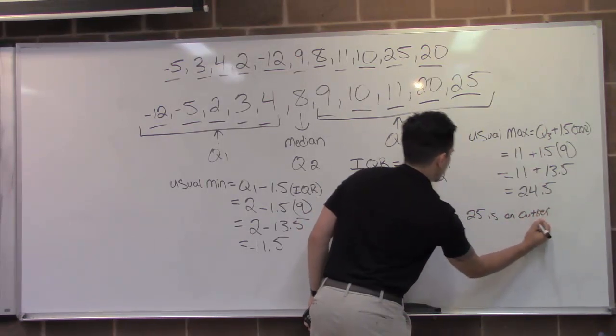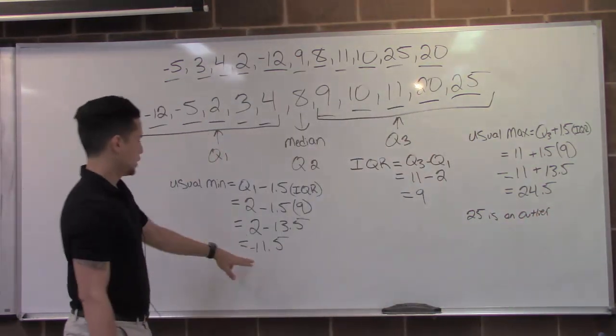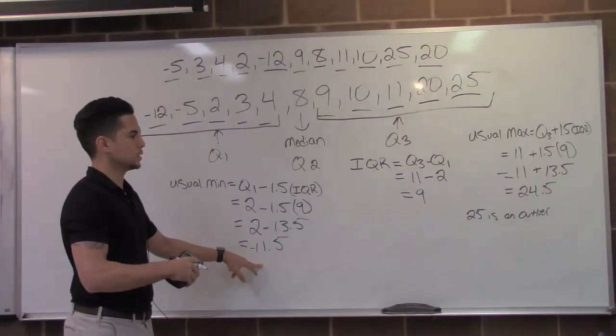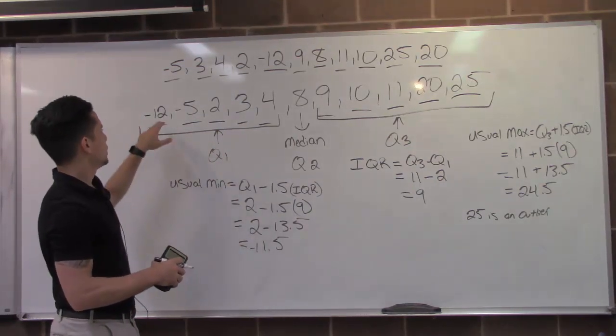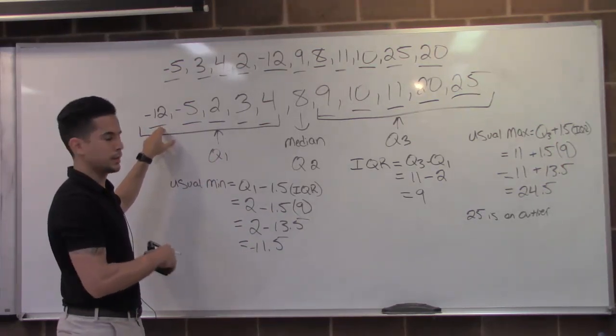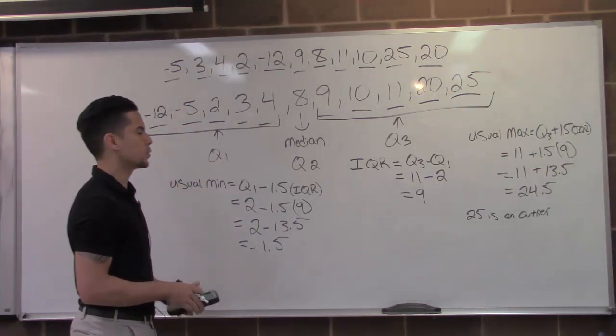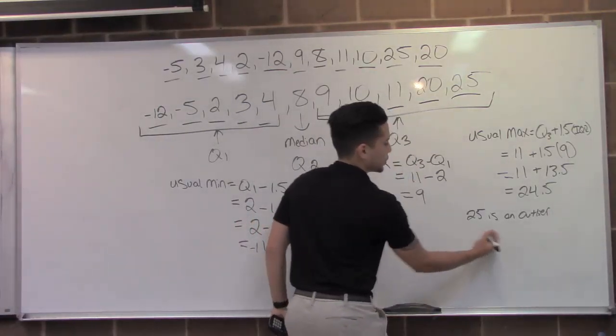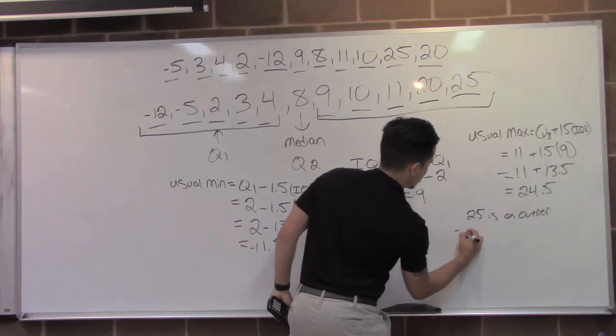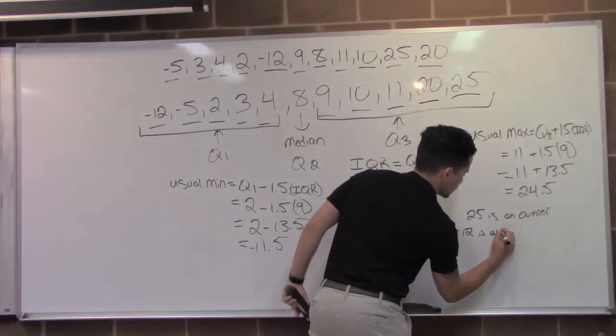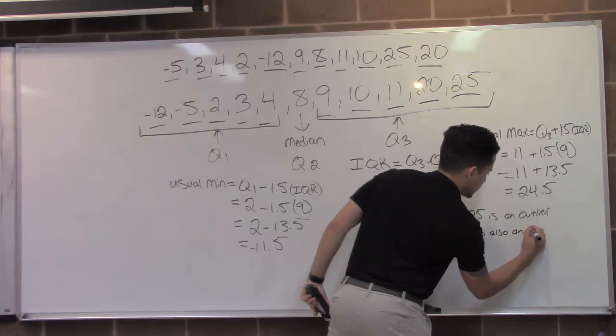So we can say 25 is an outlier, and negative 11.5 is the least it can go to. And we can see that negative 12 falls outside of that, so that is considered an outlier as well. So I'm going to say 25 is an outlier, negative 12 is also an outlier.